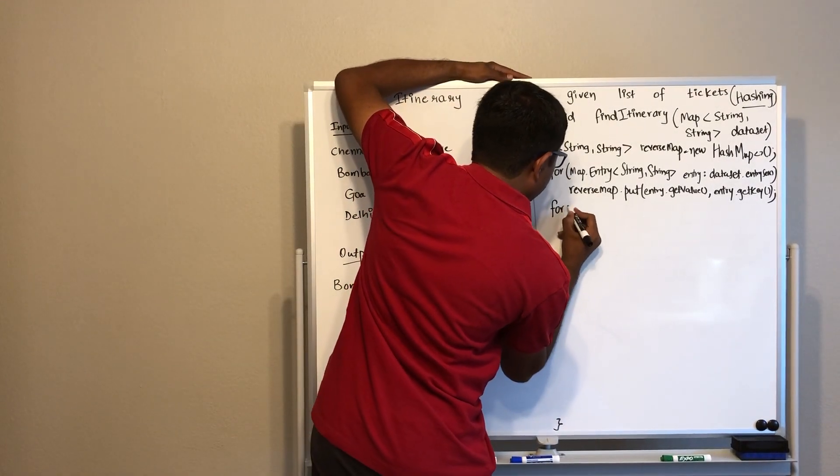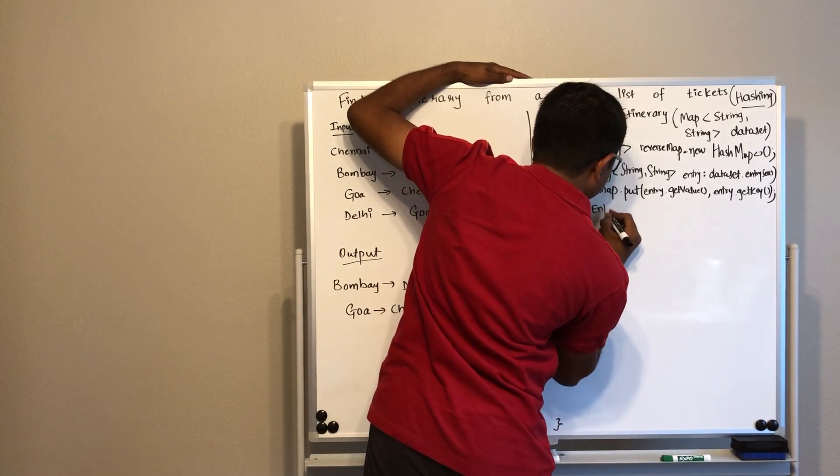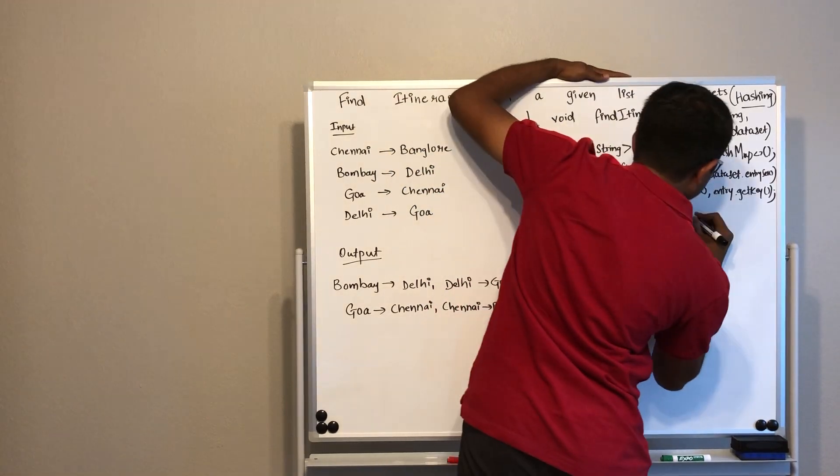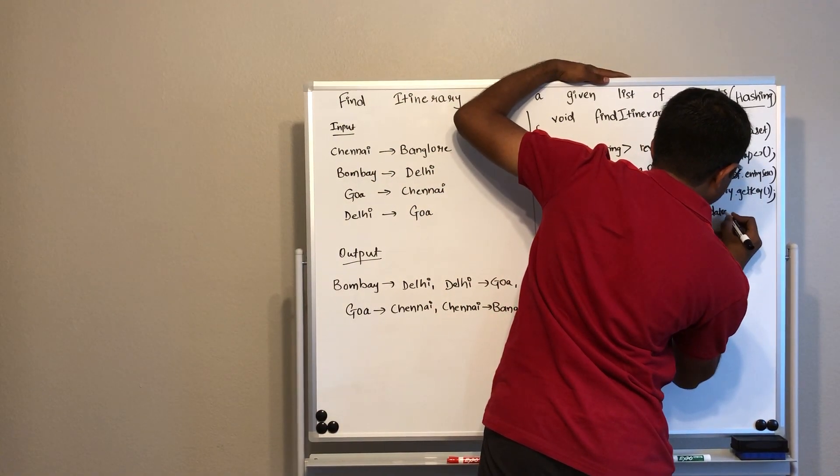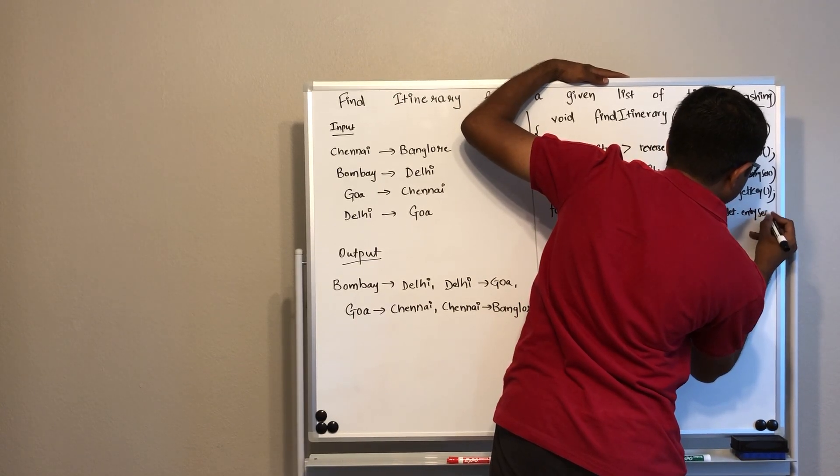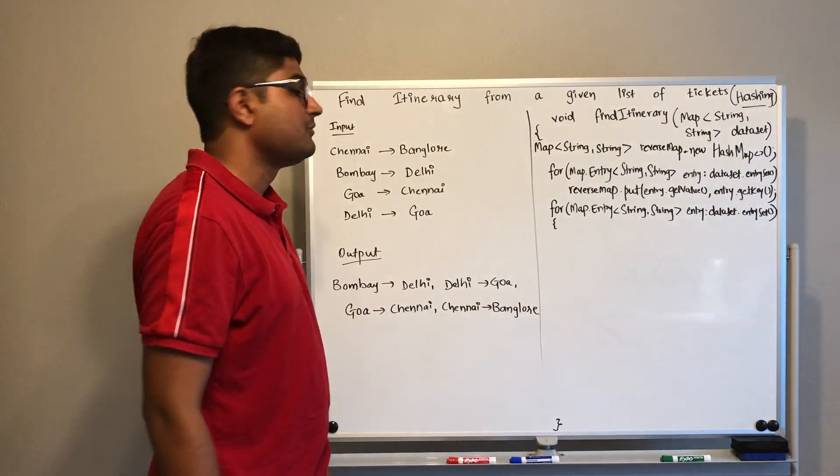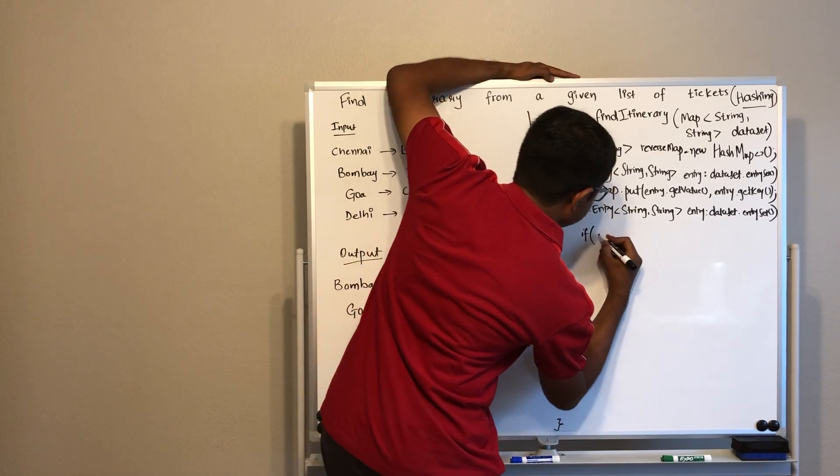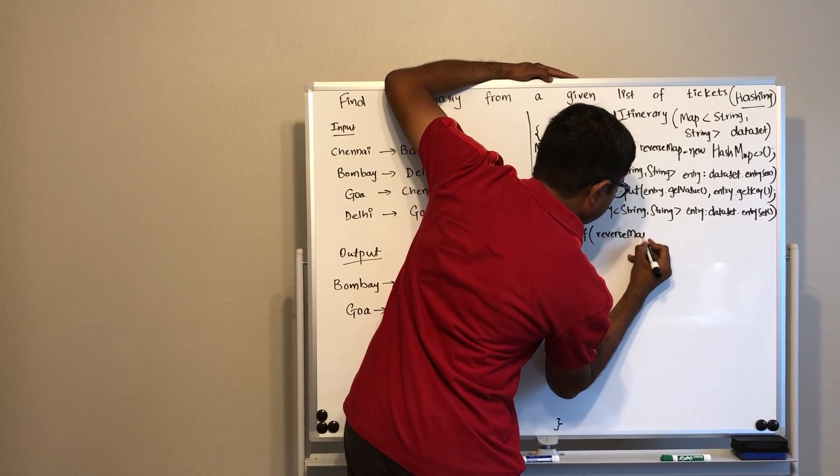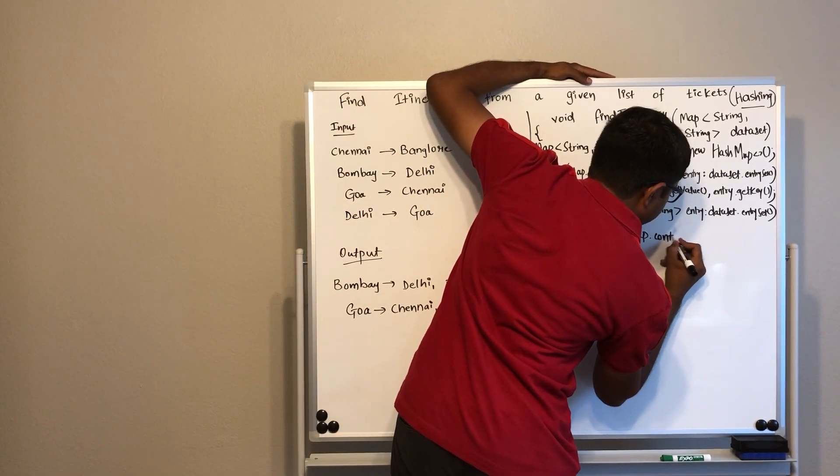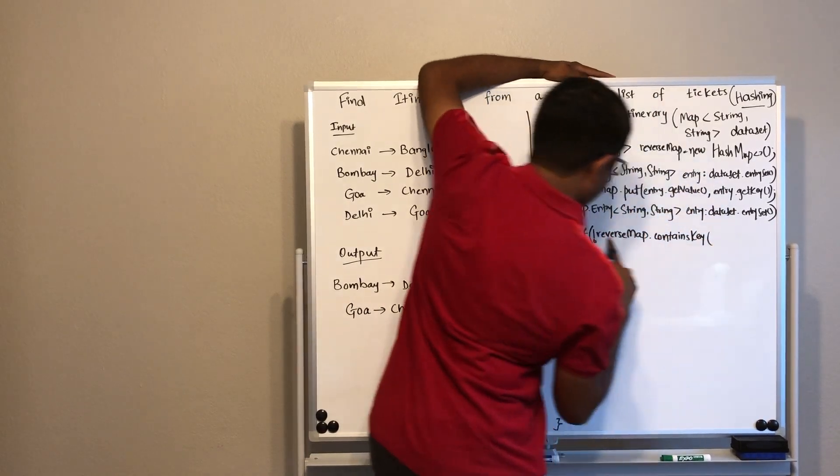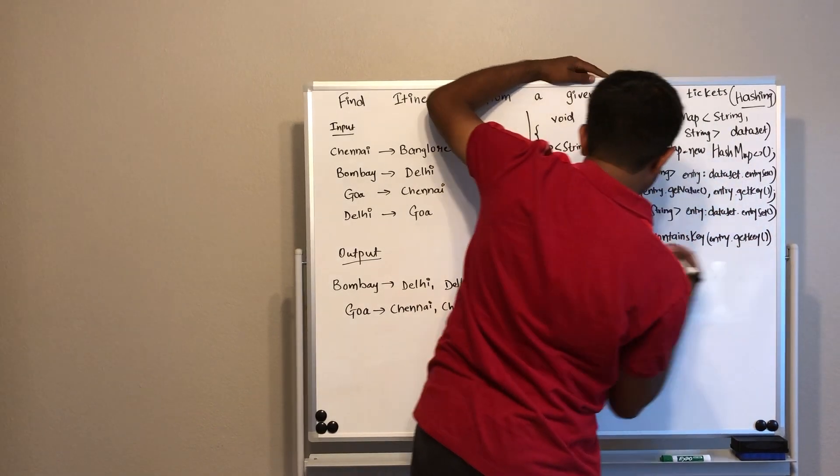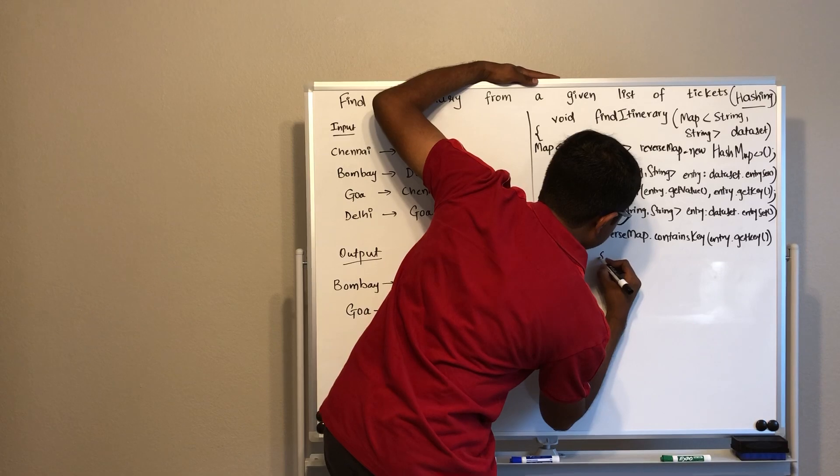So we will again iterate through our original map. We will see that for every key, is there a key in the reverse map? If this reverse map does not contain the key, that means it's the starting point.